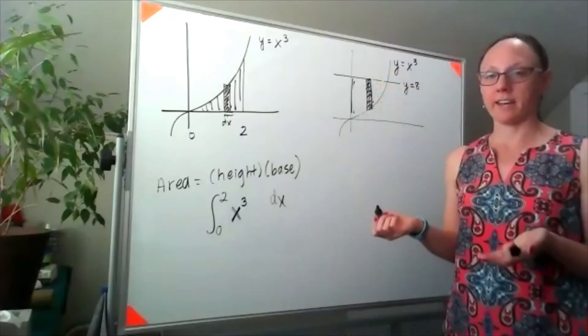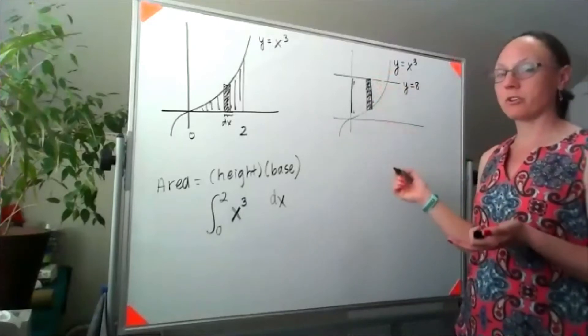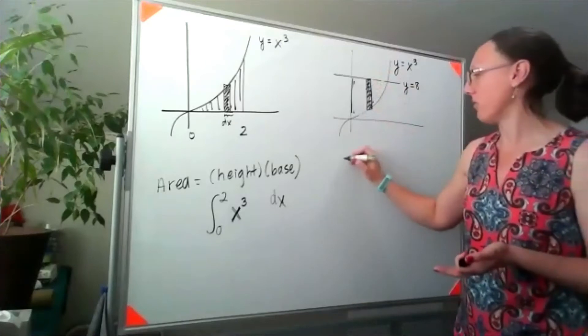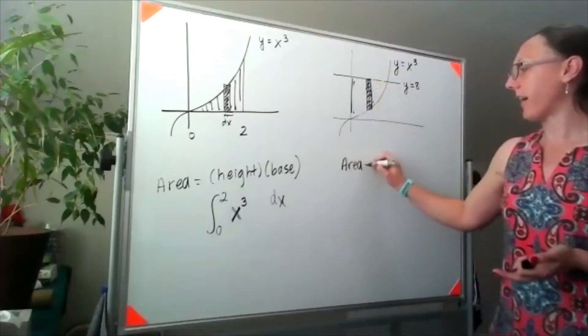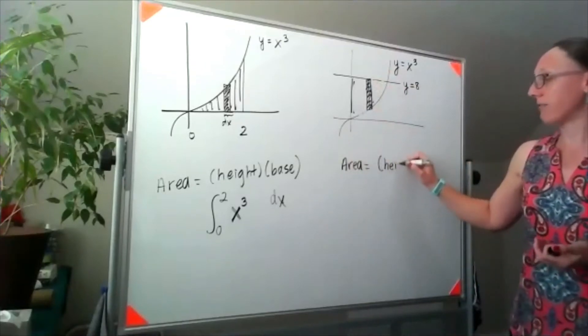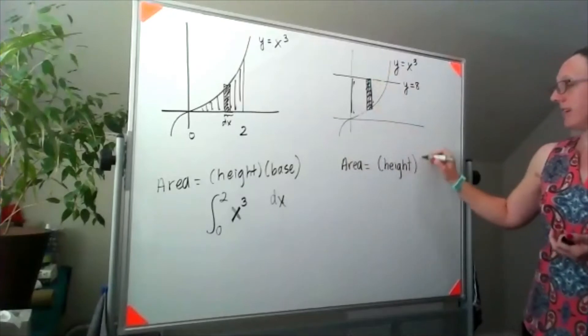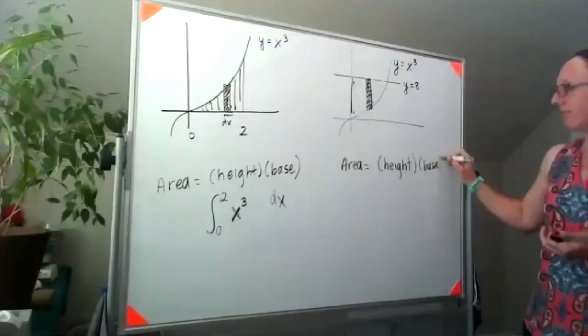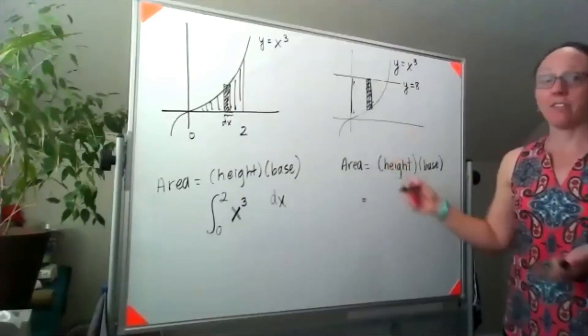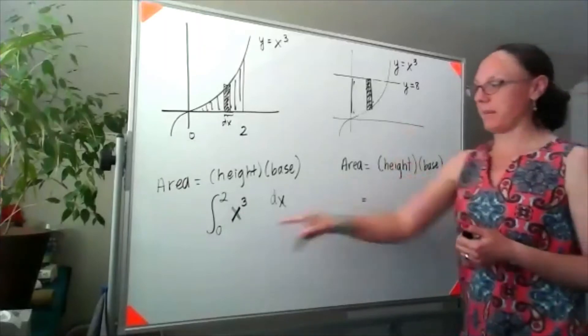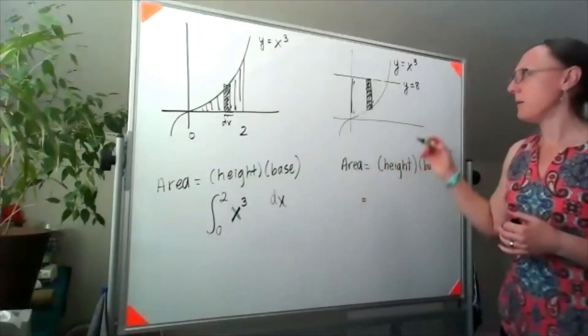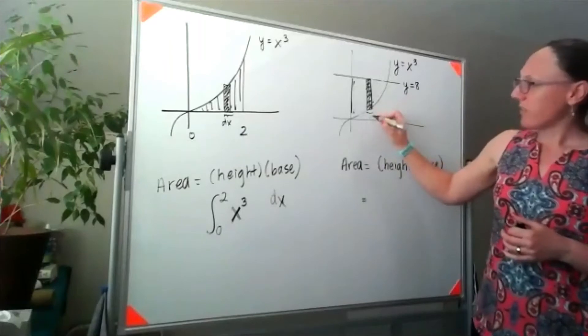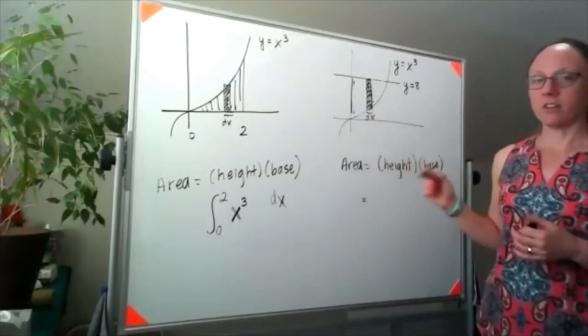If I draw an arbitrary cross section, this arbitrary cross section is still a rectangle. So in terms of that area, I'm still going to have a height for that rectangle times the base. I'm going to add those up calculus style, meaning I'm going to do a summation. The base of that rectangle is still a little bit of dx.